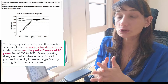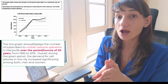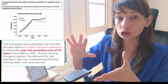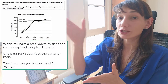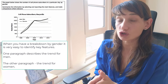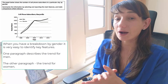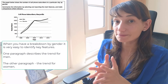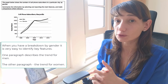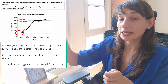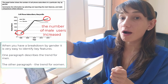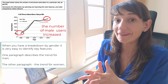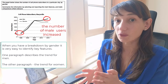Now we need to identify two main key features — one for each body paragraph. In a graph with a breakdown by gender, it's easy: one paragraph will be about men and the second about women. Let's start with the first paragraph about men. The main trend for men is that the number of male users increased over the period of time. This is our key feature for the first paragraph: over the given period, the number of men using cell phone service increased significantly.